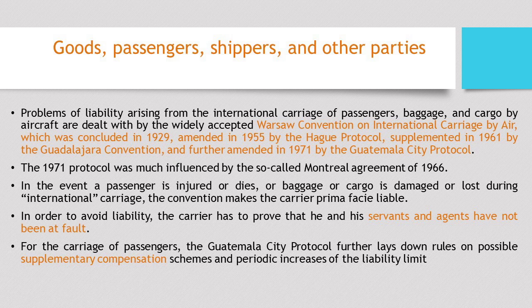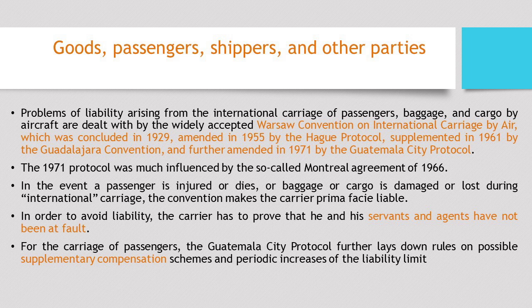Another important aspect of aircraft law concerns goods, passengers, shippers, and other parties. This is covered by the Warsaw Convention on International Carriage by Air, concluded in 1929, further amended in 1955, and now amended again through the Guatemala City Protocol of 1971. The Guatemala City Protocol is much influenced by the Montreal Agreement of 1966, which provides that if a passenger is injured or dies, or baggage or cargo is damaged or lost during international carriage, the convention makes the carrier prima facie liable. To avoid liability, the carrier must prove that its servants or agents were not at fault.